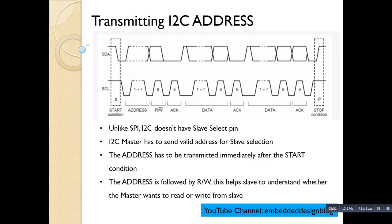The master must send a valid address immediately after the start condition. After the start condition, the master sends a read/write bit which indicates to the slave whether a read or write cycle will follow.